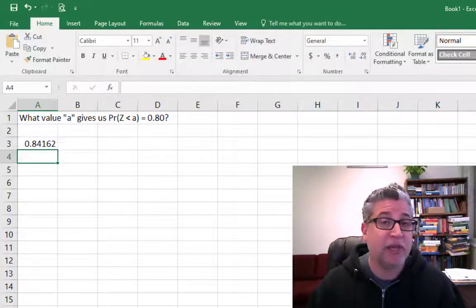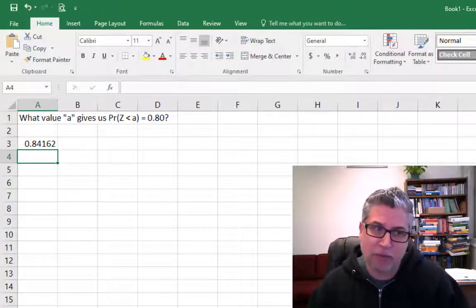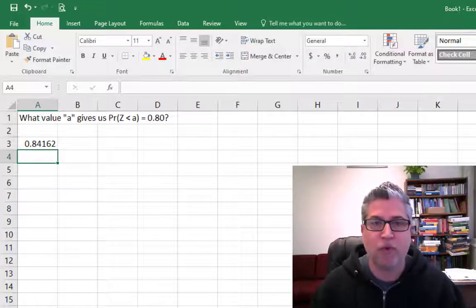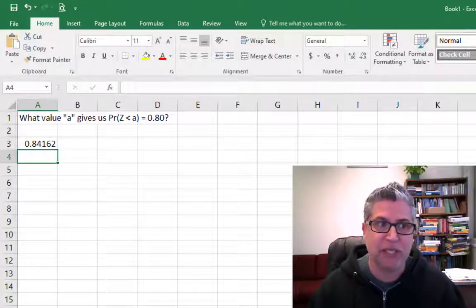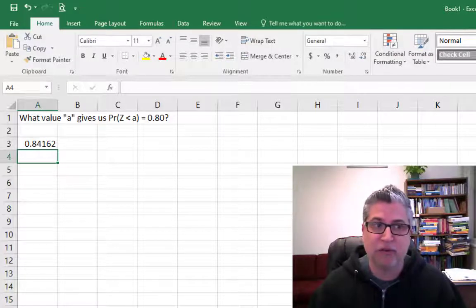Hit enter and we get a very precise answer. So with my bracketing system there with the graph, I came close to like 0.84. Here we can be even more precise. It's 0.84162. That's our particular value of z.